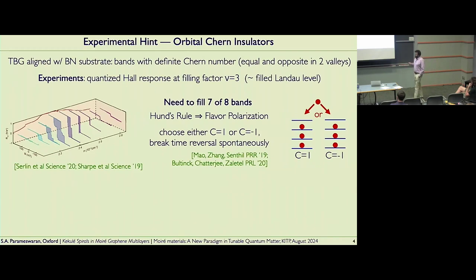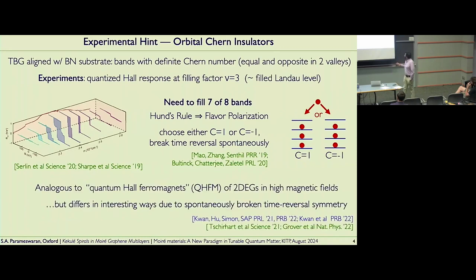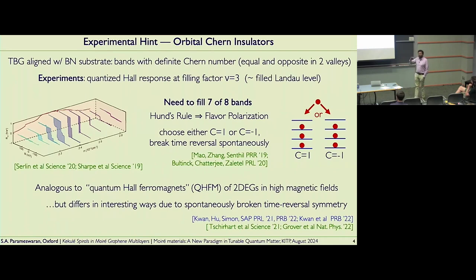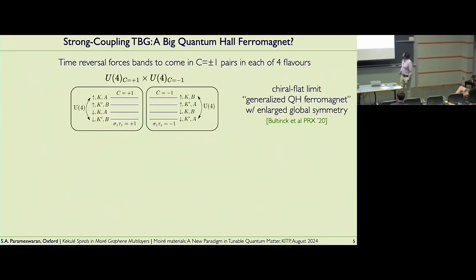This is actually very reminiscent of an older problem of quantum Hall ferromagnetism of two-dimensional electron gases in high magnetic fields. While it is different in some interesting ways — because of the nature of time reversal breaking and the fact that your unoccupied state has the opposite Chern number, which causes some interesting differences — morally, this is very similar to this old idea.